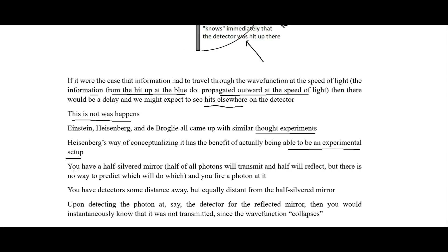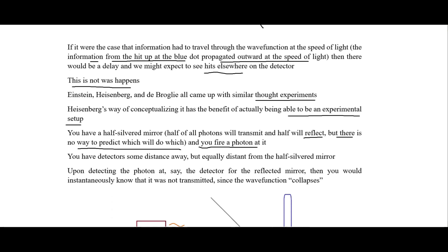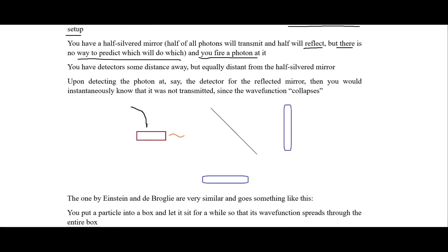We have a half-silver mirror, so half of all photons will transmit and half will reflect. There is no way to predict which will do which — it's just a one-half probability of transmitting and one-half of reflecting — and so we fire a photon at it. We have detectors some distance away but equally distant from the half-silver mirror. There is a 50% chance that it will transmit and a 50% chance that it will reflect, and then we have these detectors.